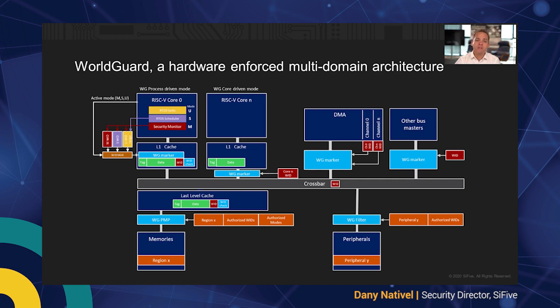The WorldGuard PMP is similar to the PMP found in the core, but adds an extra level of control where each defined memory region can be dedicated to a world or shared between different worlds with read-only or read-write privileges. There are two possible modes of operation. The first is called CoreDriven, where a single WorldID is assigned to a single core or shared between multiple cores. The second mode is even more interesting since it gives us the option to assign a WorldID not only to a core, but also to a task running on that particular core.